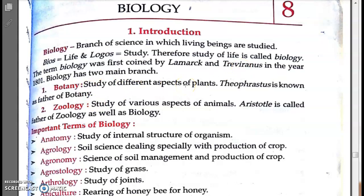Biology has two main branches: one is Botany and another is Zoology. Botany is also called plant science — in botany we study plants. In zoology, we study animals. So botany deals with plants and zoology deals with animals.